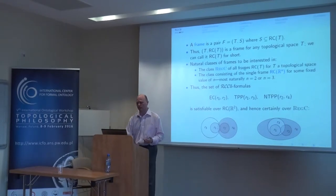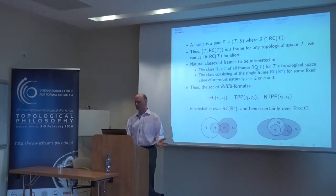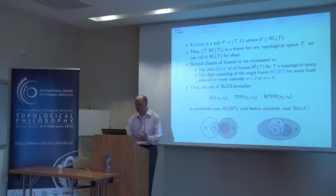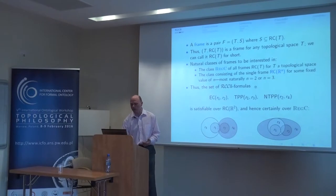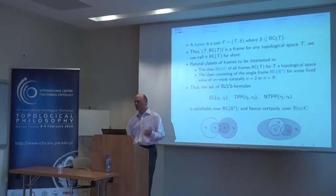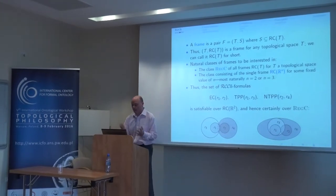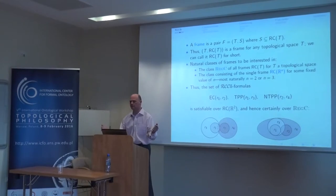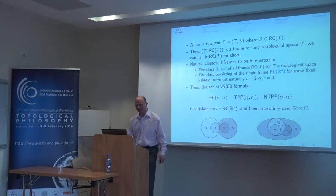Natural classes of frames: we can look at the class of all frames, all regular closed algebras. That's a class of frames which we may be interested in. Or we may be interested in very specific frames — for example, the regular closed sets of n-dimensional Euclidean space for some n. After all, we live in Euclidean space, not an arbitrary topological space. So now I can state my problem.